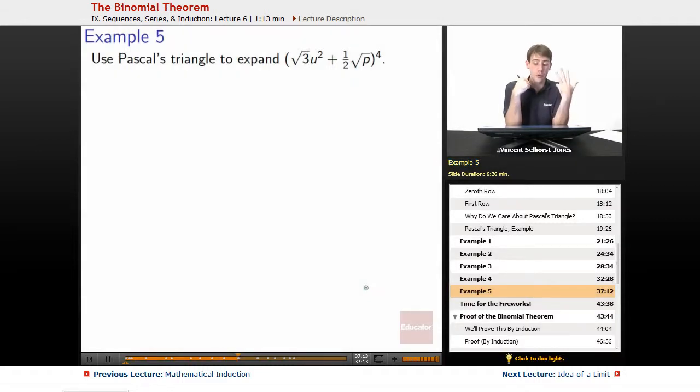Plus 1 half root p to the 4th. So at this point, what is our n? Our n equals 4, so we need to get down to the n equals 4 row.